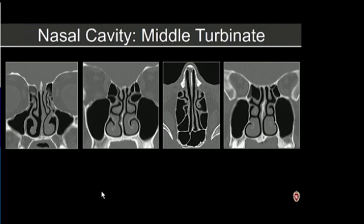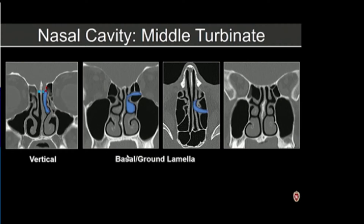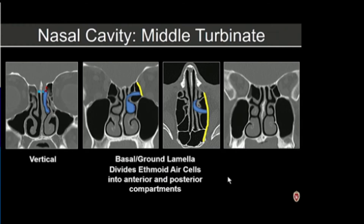Understanding the attachments of the middle turbinate is important. Superiorly, the vertical attachment attaches to the cribriform plate — so if a surgeon tugs on the middle turbinate endoscopically, they may cause a CSF leak. The horizontal basal or ground lamella of the middle turbinate attaches to the lamina papyracea, and it is anatomically important because it divides the anterior and posterior ethmoid air cells into two different compartments with different drainage pathways. The posterior part of the middle turbinate attaches to the maxillary sinus.